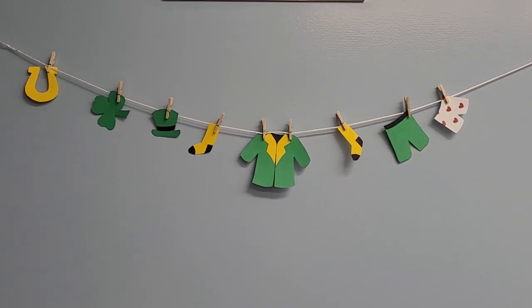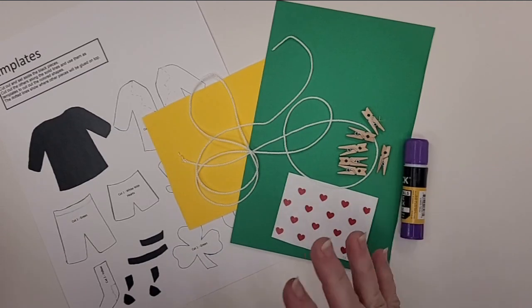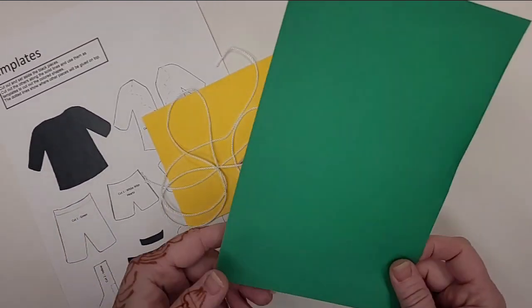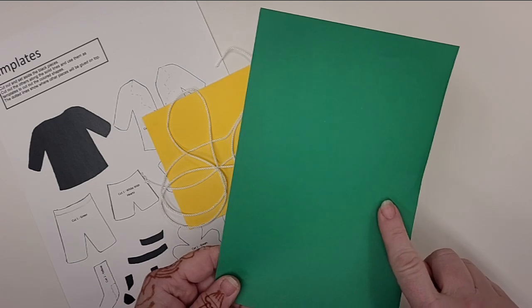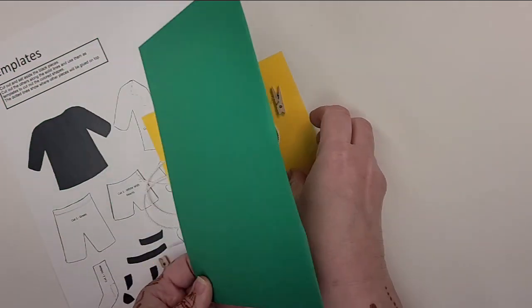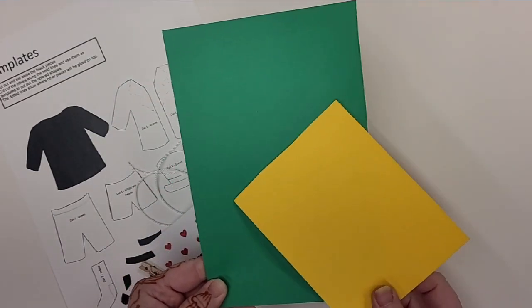Okay, now let me show you what's in the kit. So what you'll have in your kit or what you'll need to buy if you don't have the kit is a half of a sheet of green cardstock, a quarter of a sheet of yellow cardstock. Now you can use construction paper for this if you'd like.